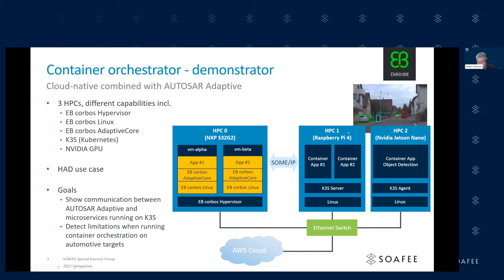The next HPC in our demonstrator is a Raspberry Pi. There we are running Linux and Kubernetes as K3S, the embedded version of Kubernetes. We have two applications that on the one hand communicate among each other via REST API and with this HPC via SOME/IP. We'll show you later how we achieved that and how it works in detail.